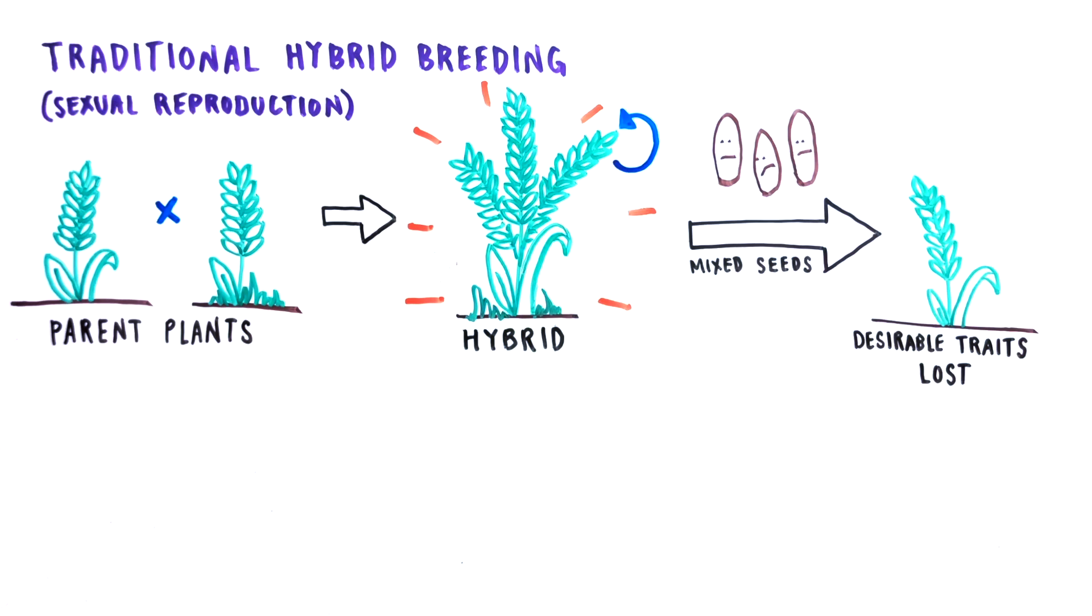So why aren't offspring identical to their parents? Let's zoom into their cells to find out.